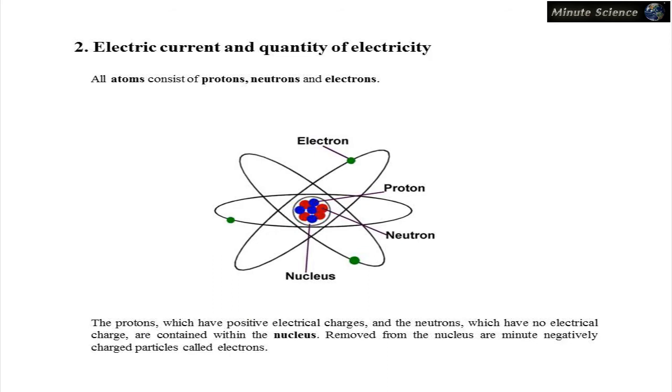Electric current and quantity of electricity: All atoms consist of protons, neutrons and electrons.